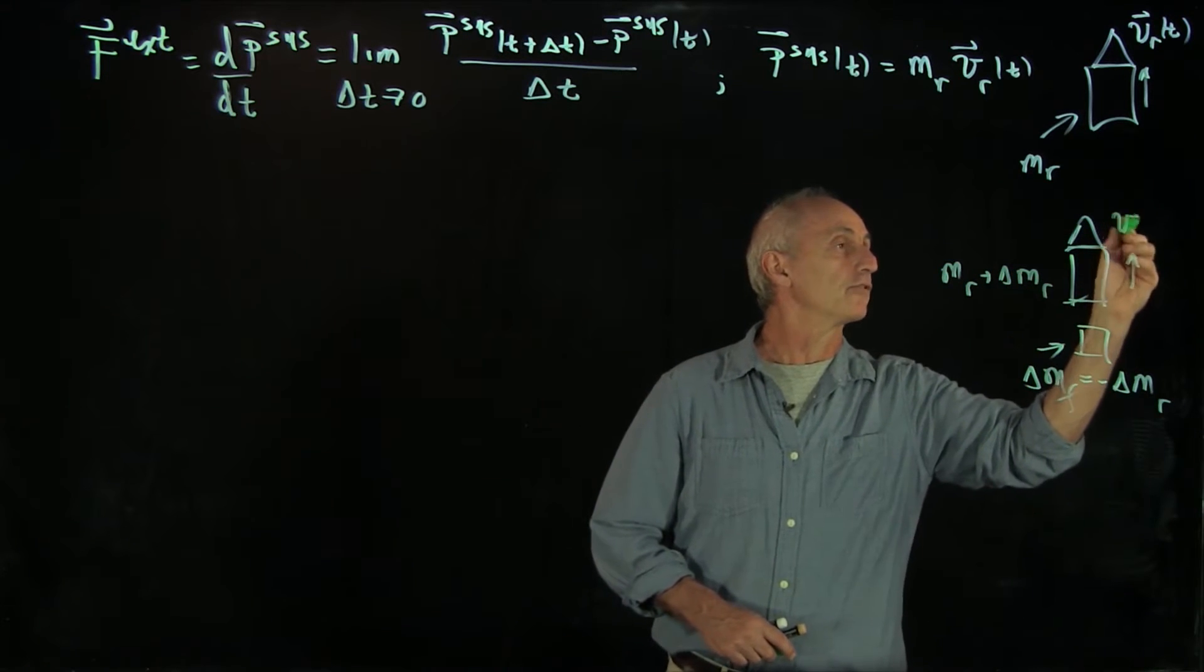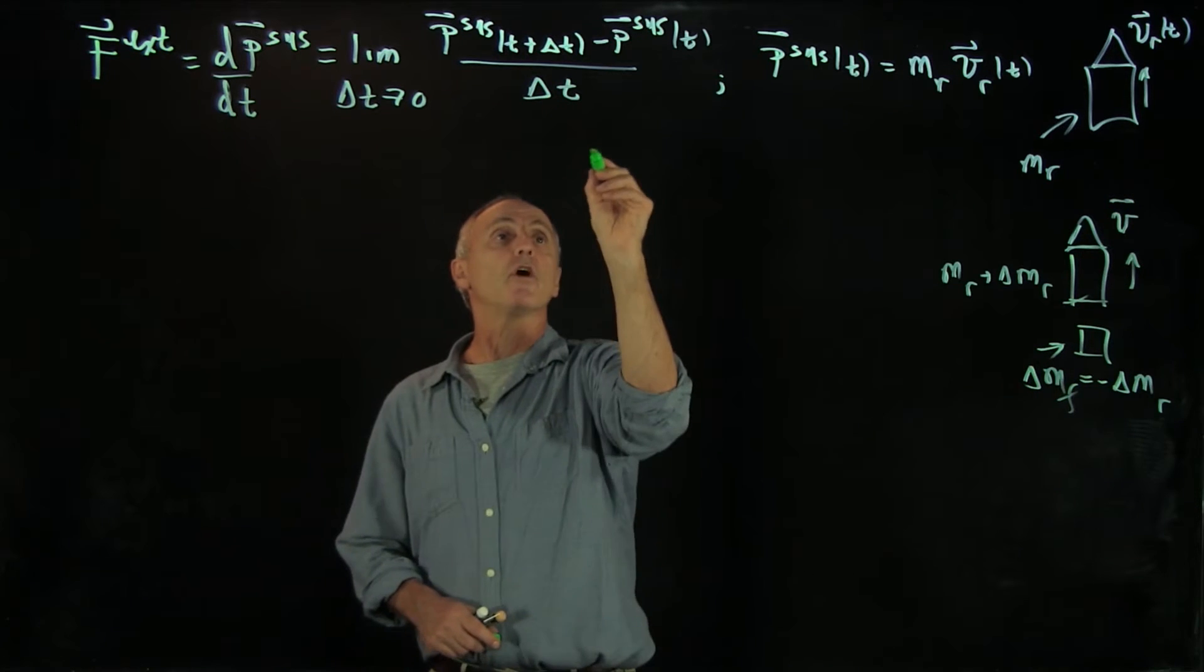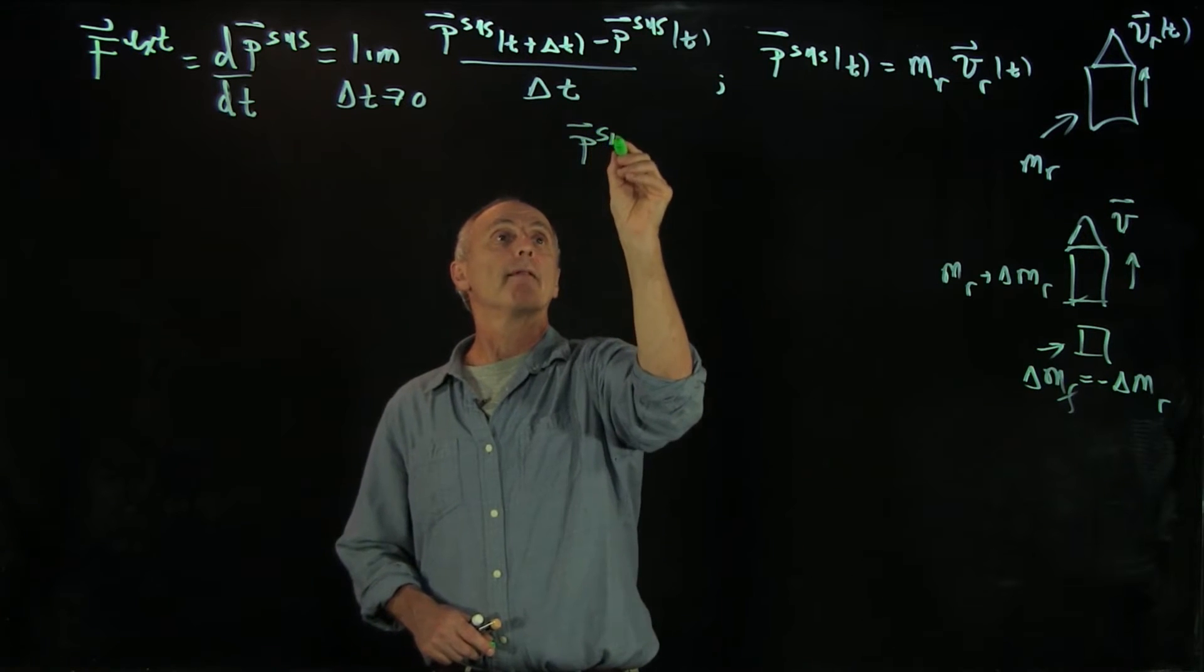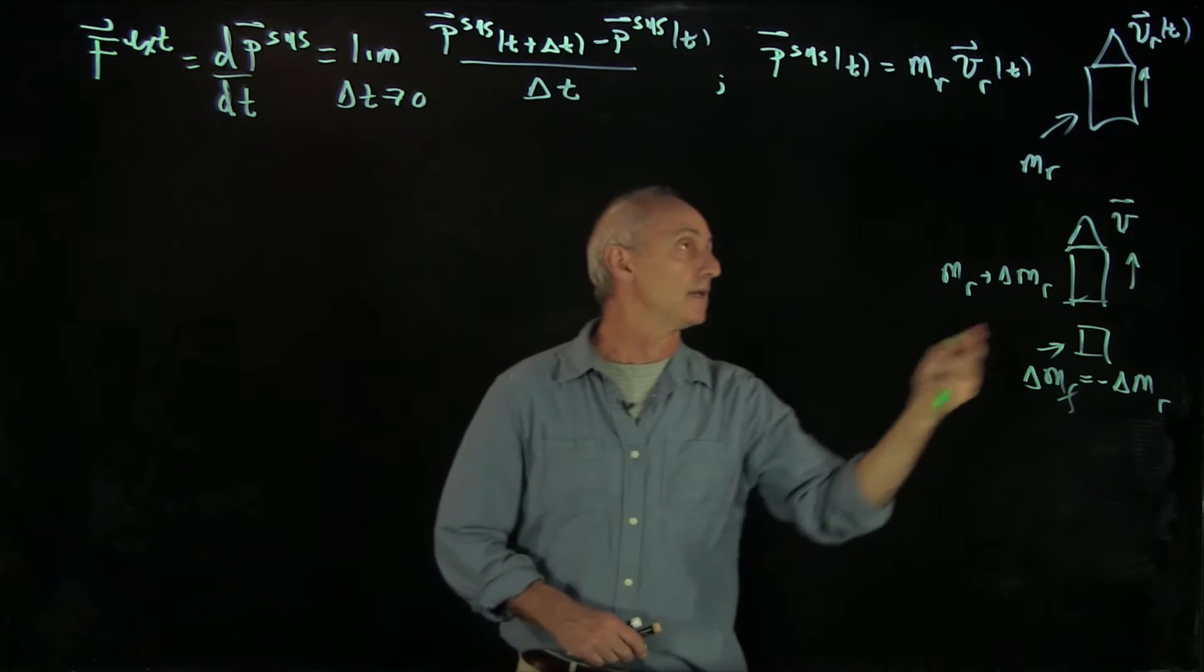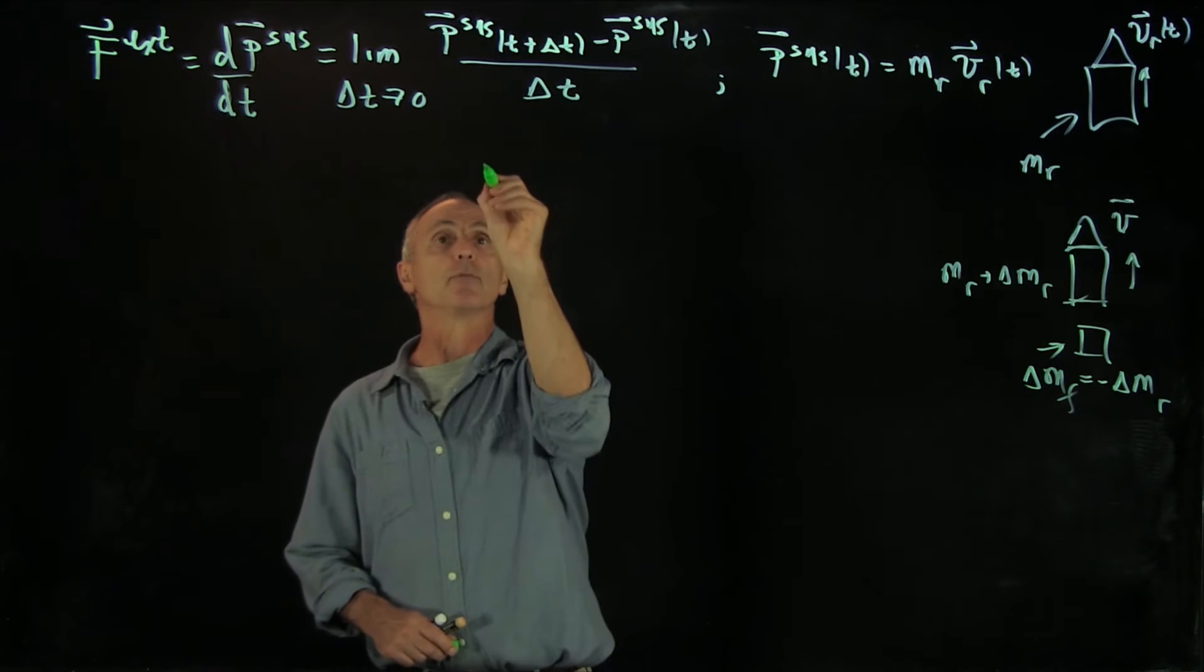And we had the velocity in the ground frame, which we saw was equal to—so let's write out the momentum of the system at time t plus delta t. That was a little bit longer.